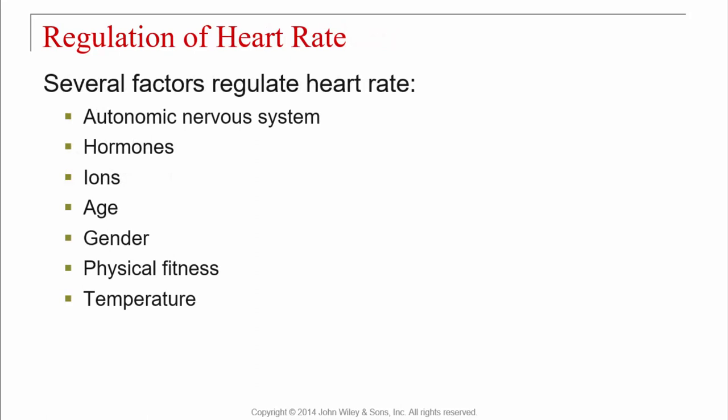Several factors regulate heart rate. The autonomic nervous system: sympathetic increases heart rate — fight or flight — while parasympathetic decreases it — rest and digest. Hormones such as epinephrine cause a sympathetic response, raising heart rate. Ions such as calcium can change heart rate; too much calcium in the blood can cause arrhythmias.